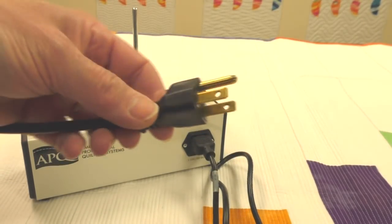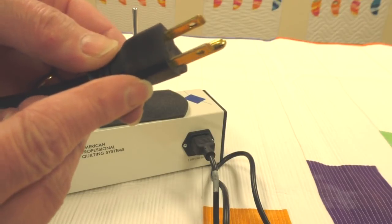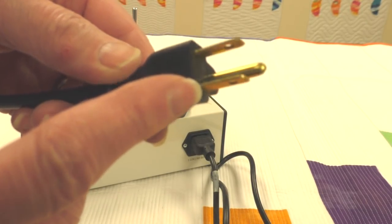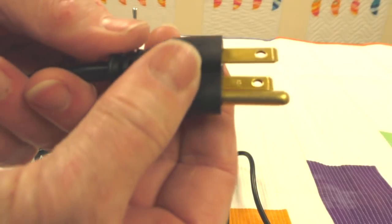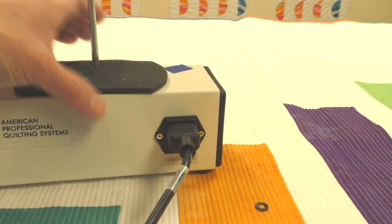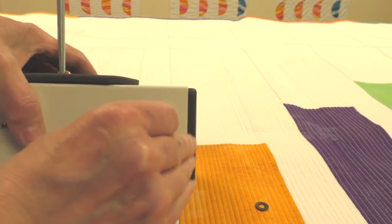If you don't live in the United States or Canada, APQS will include a transformer for your turbo winder. However, you may need to locate an adapter to convert the plug for the transformer to the outlet that matches your wall.